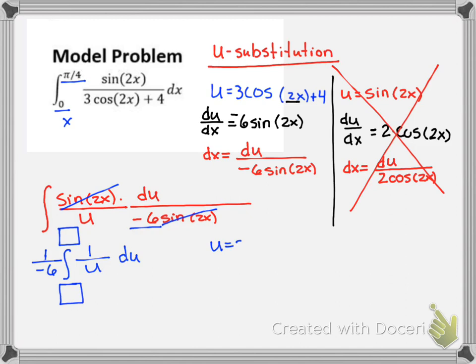If u equals 3 cosine of 2 times x plus 4, then my lowest integration limit is 0. 2 times 0 is 0. Cosine of 0 is 1. 3 times 1 is 3. Plus 4 is 7. So this lower integration limit will be 7.